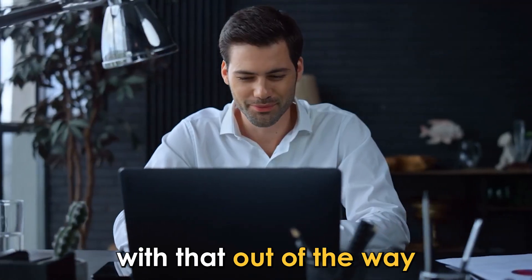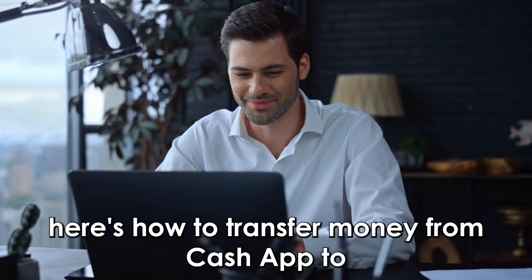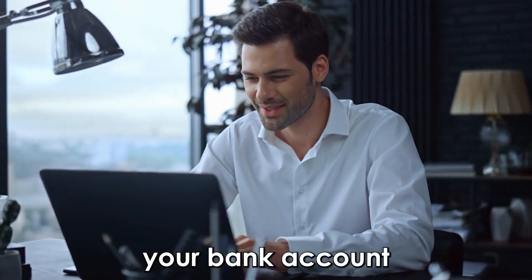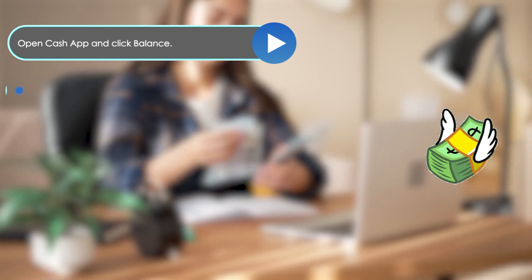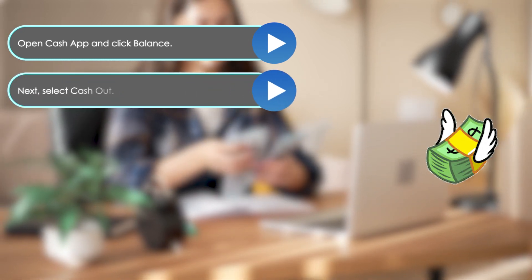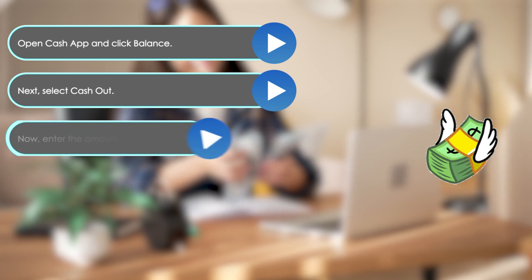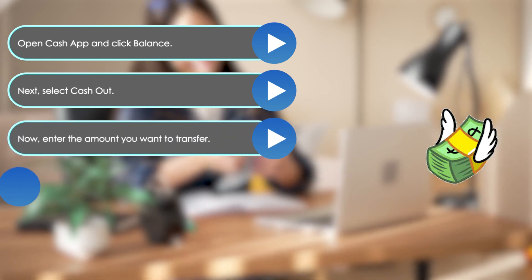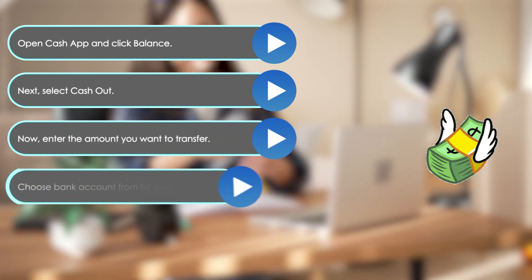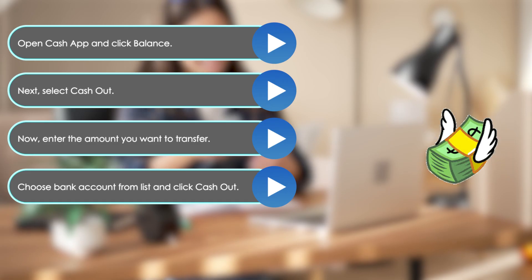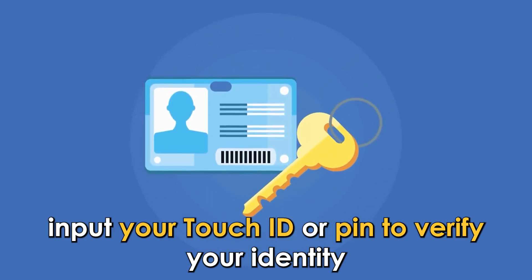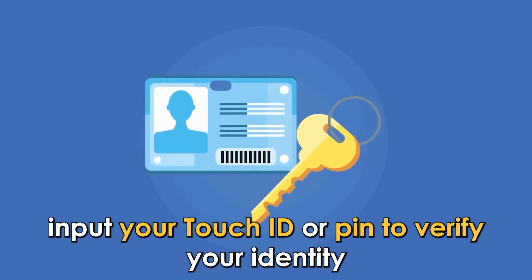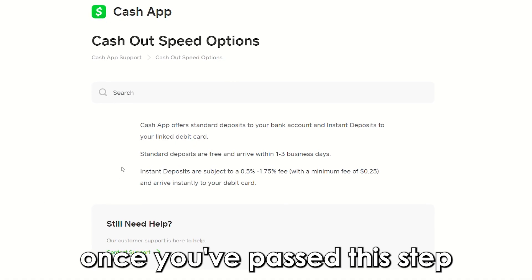Here's how to transfer money from Cash App to your bank account. Open Cash App and click Balance. Next, select Cash Out. Now, enter the amount you want to transfer. Choose the bank account from the list and click Cash Out. Input your Touch ID or PIN to verify your identity.